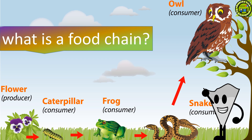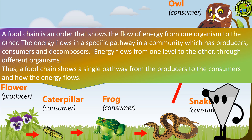All living things need nutrients to survive, and food chains and food webs show these feeding relationships. What is a Food Chain? A Food Chain is an order that shows the flow of energy from one organism to the other. The energy flows in a specific pathway in a community which has producers, consumers and decomposers. Energy flows from one level to the other through different organisms. Thus, a Food Chain shows a single pathway from the producers to the consumers on how the energy flows.